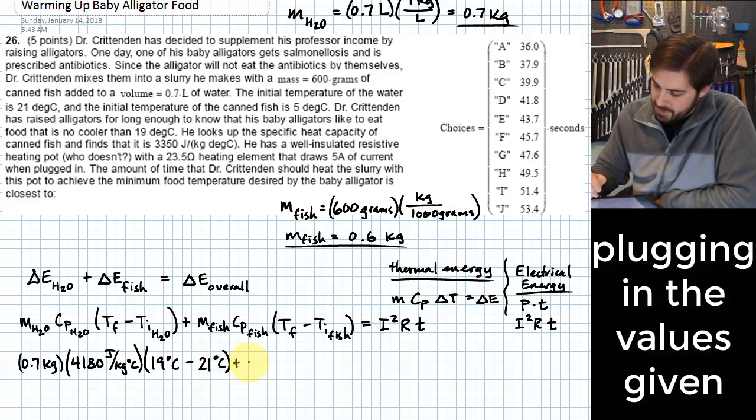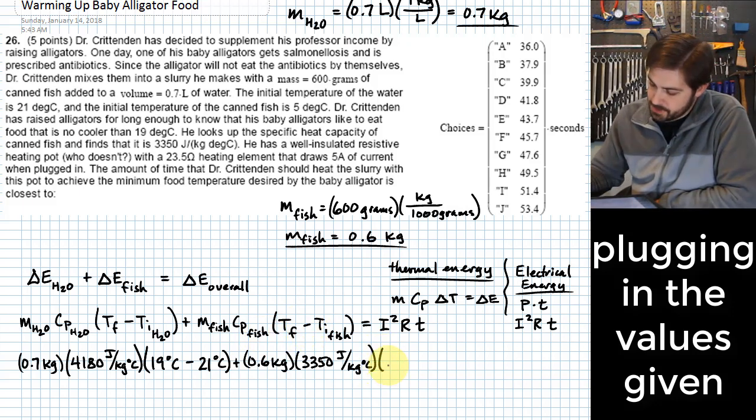Next we have the mass of the fish which is 6 tenths of a kilogram. C sub P, the specific heat for the fish, is 3350 joules per kilogram degrees C. And then lastly we have the difference in temperature that happens for the fish, which again is 19 C, and then the fish starts out at a different temperature value there, starts out at 5 degrees C.